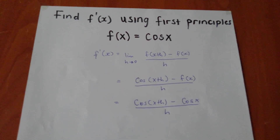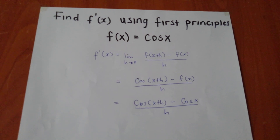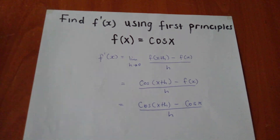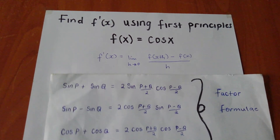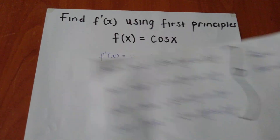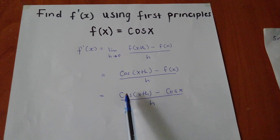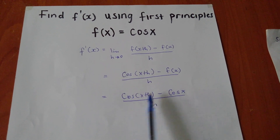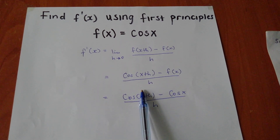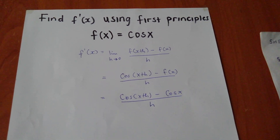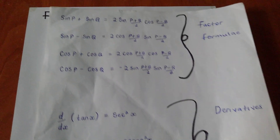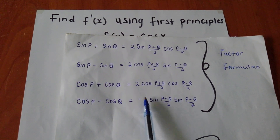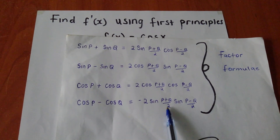From the factor formula identities, which are very useful for such expressions, we look at where we have cos minus cos. Using the factor formula: cos P minus cos Q equals negative 2 sine((P plus Q)/2) sine((P minus Q)/2). Here P carries the whole bracket (x plus h) and Q carries x.